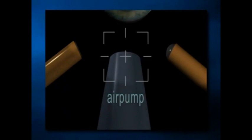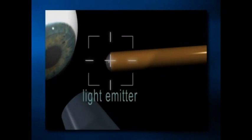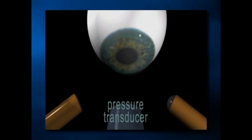There are four key components to the applanation system of the Ocular Response Analyzer: a solenoid-driven air pump, an infrared light emitter, a light intensity detector, and a pressure transducer. At the start of the test sequence, the infrared light emitter directs a beam of light onto the cornea.